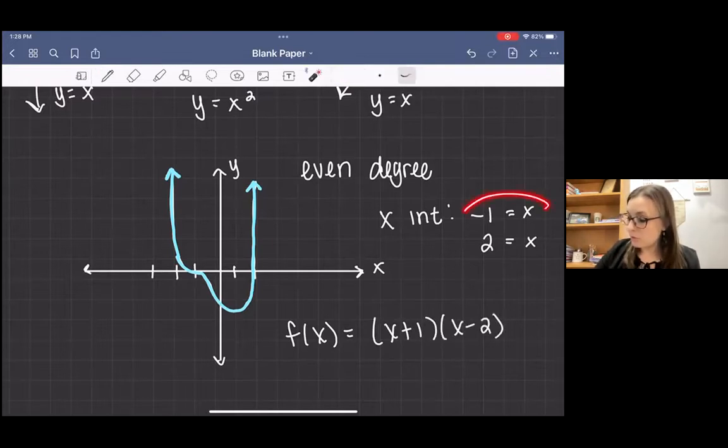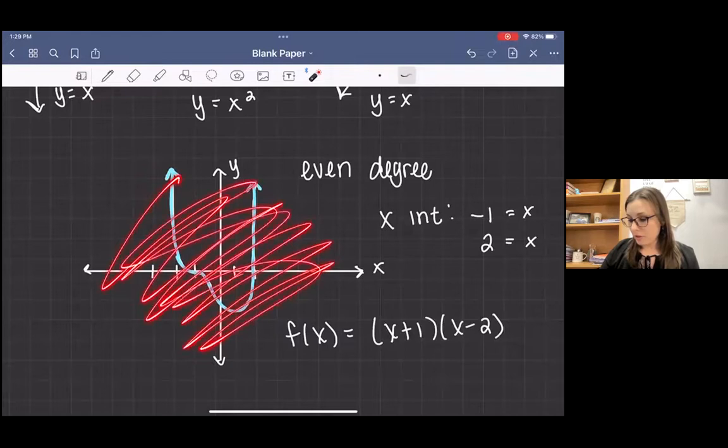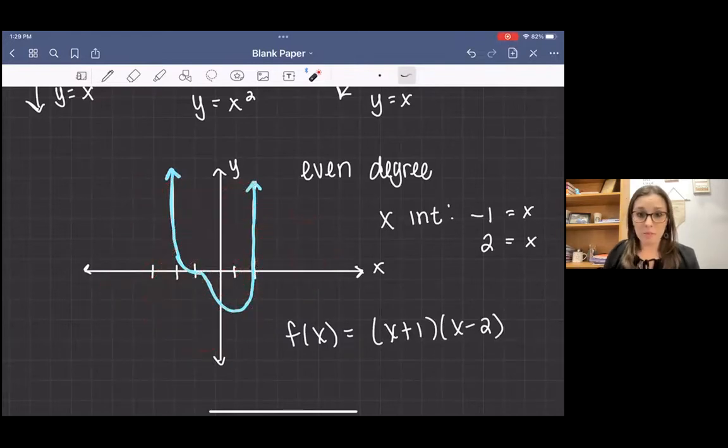Remember that comes from reversing this, where we add one to both sides, that gets the factor, minus two to both sides, that gets the factor. Now I need to figure out what are the exponents on those factors. I do know it's an even degree, and if I weren't given the graph, then that qualifies because one plus one is two, even degree.